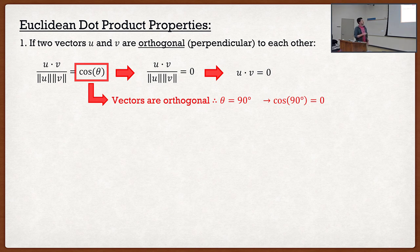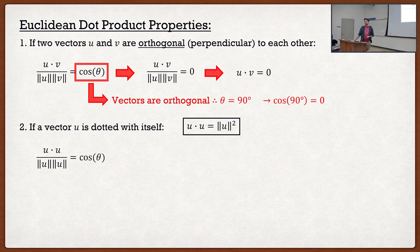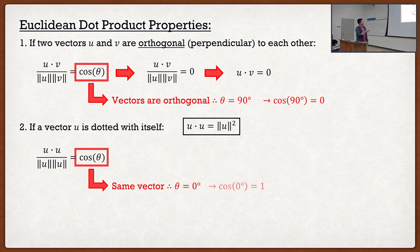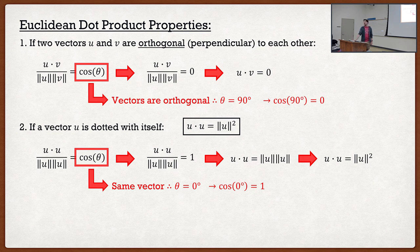The second dot product property is that a vector dotted with itself equals the magnitude of that vector squared. This is very important when we start talking about proofs — when we get into strain, this will be critical to defining the Green strain tensor. If a vector is dotted with itself, the angle is zero, cosine of zero is 1, so u dot u equals the magnitude of u squared — a scalar times itself.